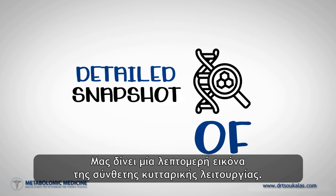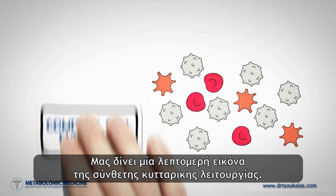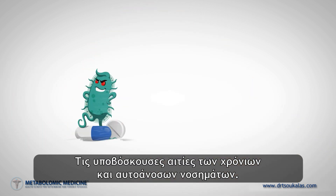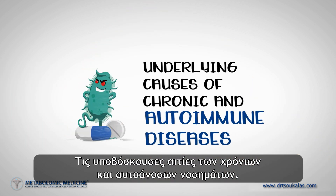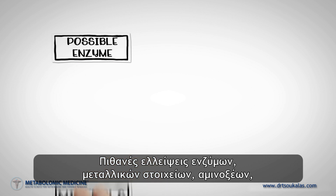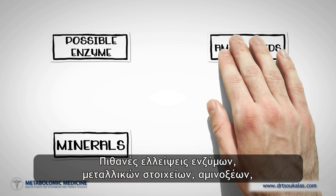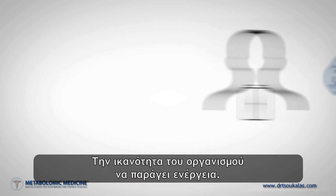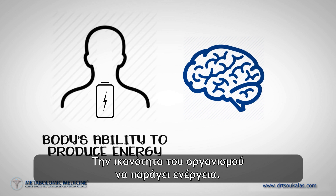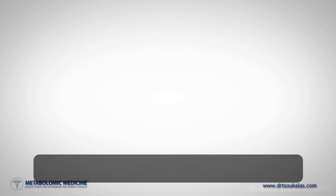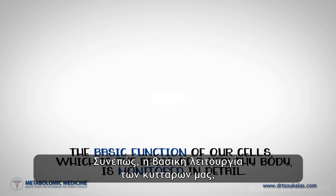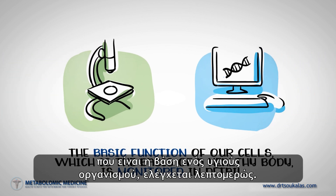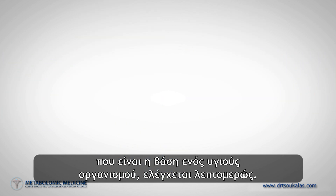It gives us a detailed snapshot of the complex cell function, the underlying causes of chronic and autoimmune diseases, possible enzyme, mineral, amino acid, vitamin, and omega-3 fat deficiencies, the body's ability to produce energy, and the status of our nervous system. Thus, the basic function of our cells, which is the basis of a healthy body, is monitored in detail.